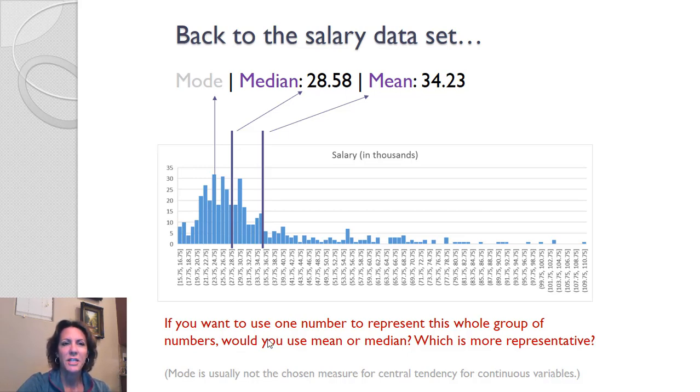When you have skewed data, the median might be the better measure of central tendency. So as we look at this whole thing, we've got a couple different modes. So we're not even going to think about mode as being a good measure of central tendency in this case. But if we calculate the median salary going from $15,000 to $110,000 or whatever, the median in this data set, the geographic middle, the point at which half of the scores are above and half are below, is 28.58. The mean, however, is 34.23.